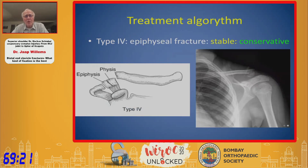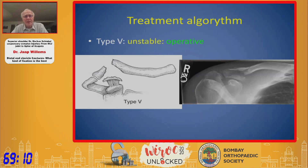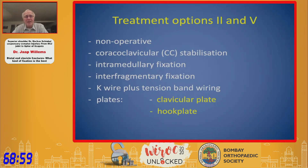Type 4 is also an intra-articular fracture; it is stable and you can leave it. It might result in a little malunion, but normally in these young patients you get remodeling of the clavicle long-term. Type 5 is also unstable — an early X-ray after injury may look stable but after one week it was unstable, and it normally needs operative treatment.